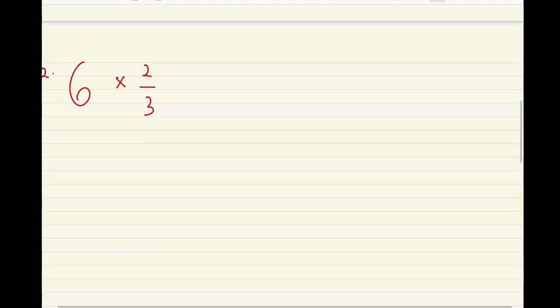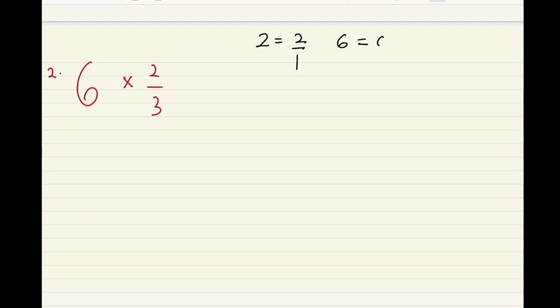For number 2, we have 6 whole number times 2 over 3. Whole numbers can also be expressed as fractions. For example, if you have 2 whole number, it's the same as 2 over 1. If we have 6, it's 6 over 1. So this is going to be 6 over 1 times 2 over 3.